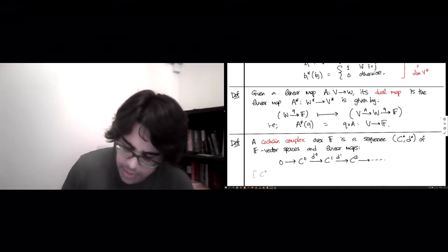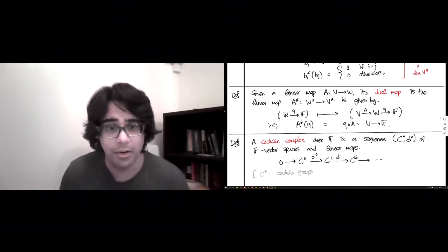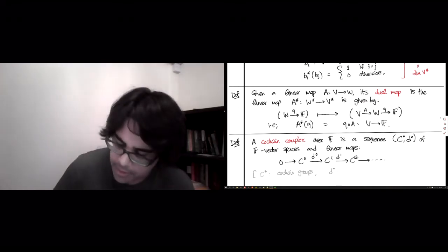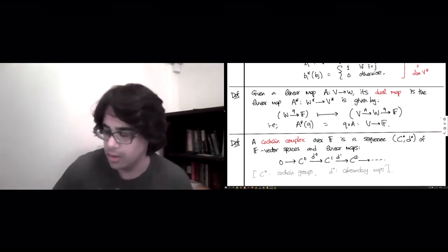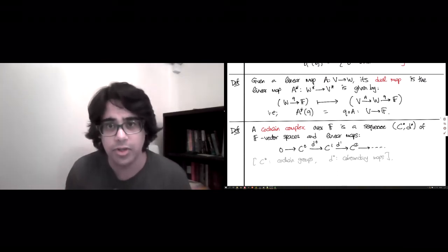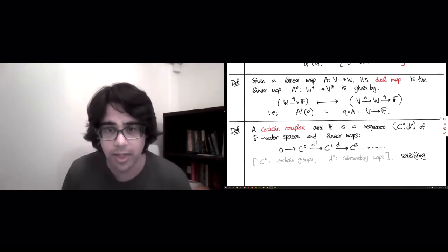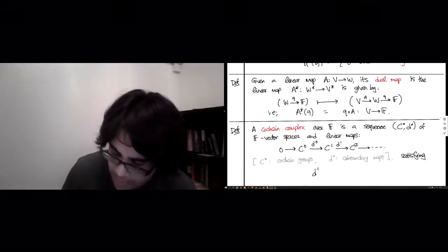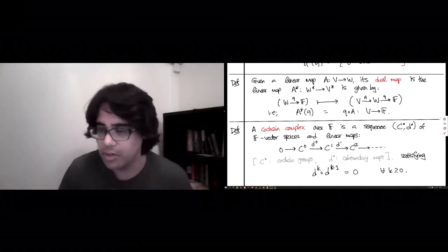Side note, the C's are called the co-chain groups. So far we've flipped around a whole bunch of arrows and added co's to the beginnings of known words. The D's are called the co-boundary maps or co-boundary operators. And of course, that's not all. This data satisfies the relation that whenever you compose two adjacent ones, you get 0. So Di composed with Di minus 1 equals 0.